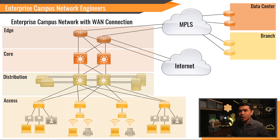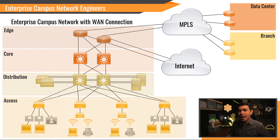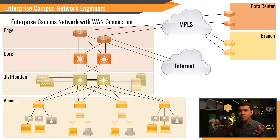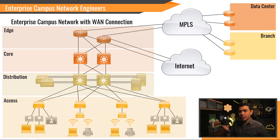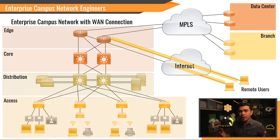You also support connection and access for many different corporate users and guest users. Your main appliances would be layer 2 and layer 3 switches, wireless LAN controllers, and a few routers — with a lot of switching configuration. Sometimes, you will also work with network security appliances such as AAA servers, VPN concentrators, next-generation firewalls, and HTTP proxies, because you need to monitor user activities.